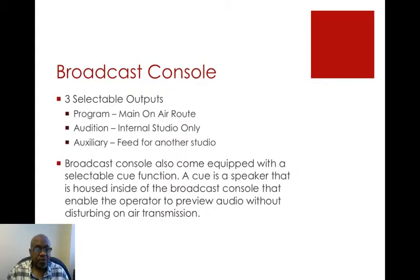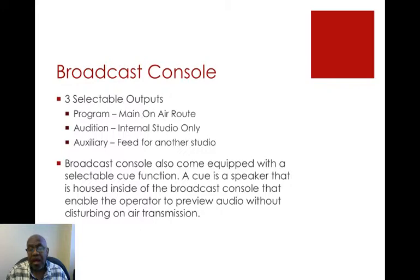The broadcast console has three selectable outputs — we're talking about the broadcast console in RTC, which many of you are familiar with. It has program one, and that's for the main on-air route or the route directly to the speakers. Audition is when you can listen to program items in the studio only. And then the auxiliary feed is for content that comes from another studio, though upstairs we don't have that capability.